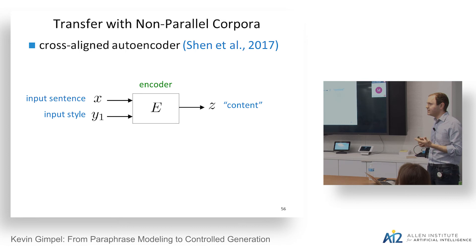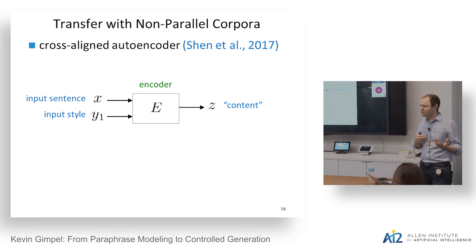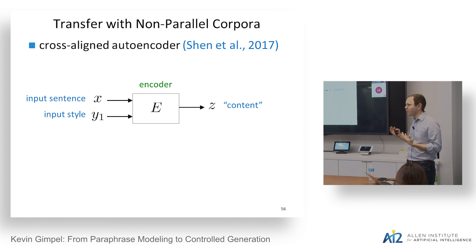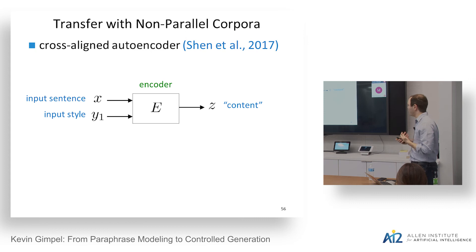Shifting gears: we've also used the Para-NMT paraphrase pairs for style transfer — or attribute transfer, as some call it. Anytime you have two corpora and want to transfer characteristics from one to the other, these non-parallel transfer methods can be applied. We started with the cross-aligned autoencoder from Shen et al. (NIPS 2017). You have two datasets in different styles X1 and X2; an encoder reads a sentence and outputs a content vector Z with the style stripped away, then a generator takes Z and the target style to produce output in the new style.